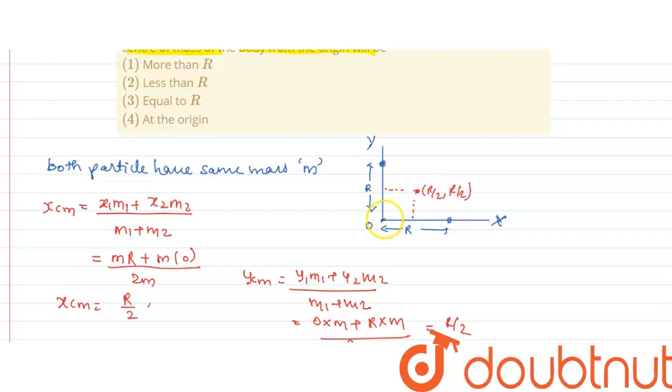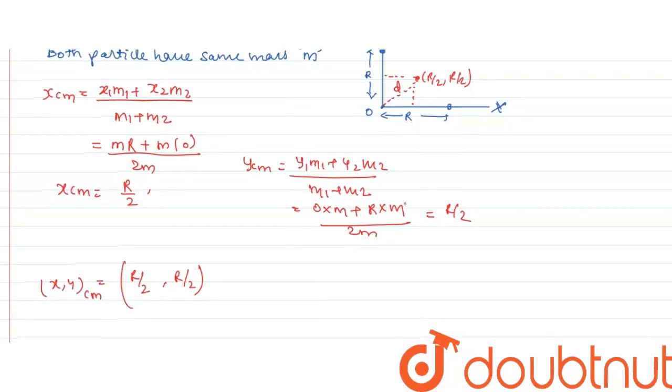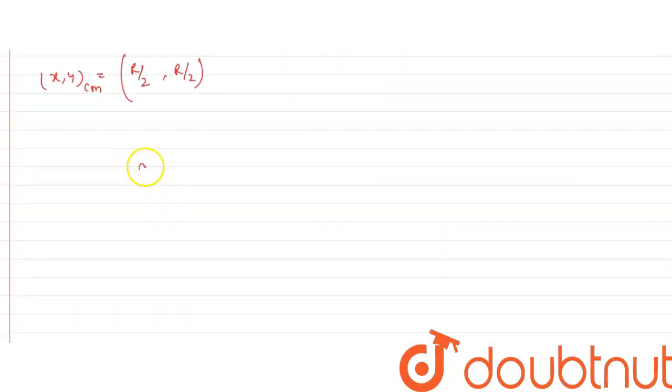Now, we have to find this distance. So, to calculate this distance, say this distance is d, the distance d will be root of (R by 2)² plus (R by 2)², we get root of R² by 4 plus R² by 4, which is root R² by 2.